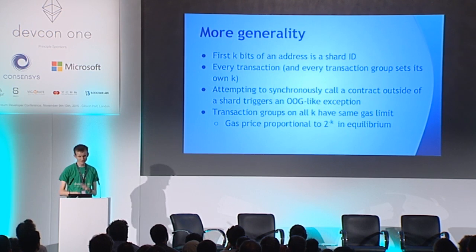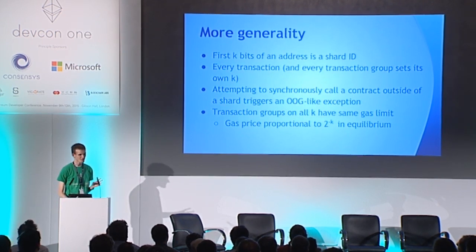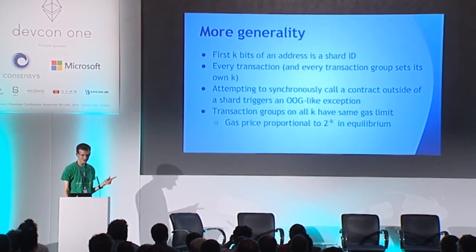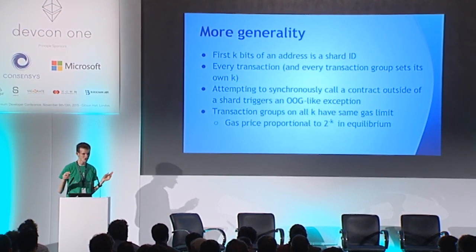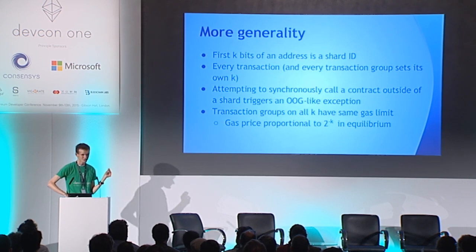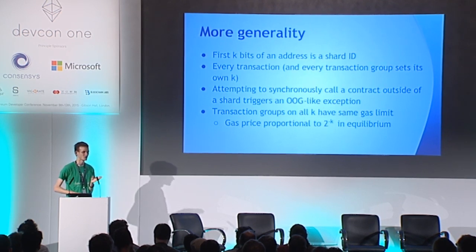Skipping the economics — the basic summary is: yes, you can do it, it's fine. Even though you need multiple transactions, you can actually make it censorship resistant. Because the log was created, you have common knowledge that a transaction completing the process can be made, and so you can punish validators for not making it within some number of blocks.